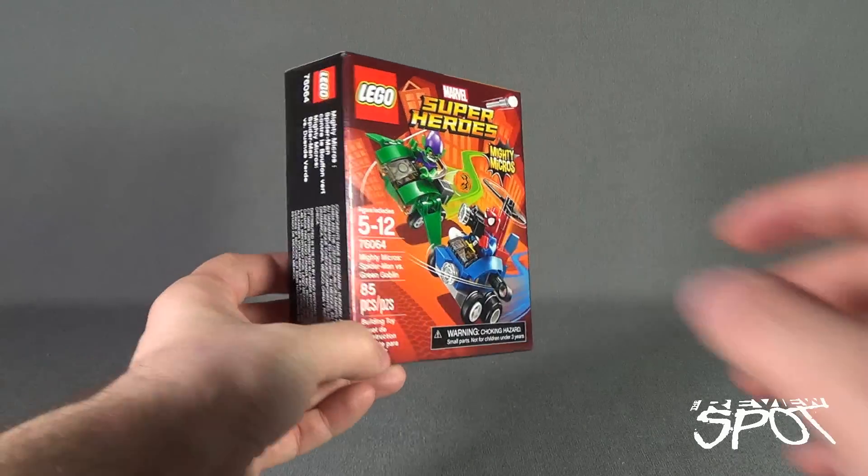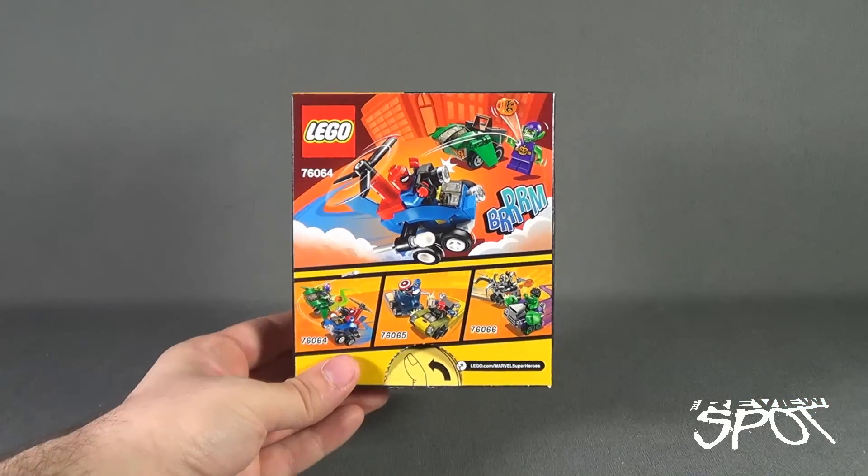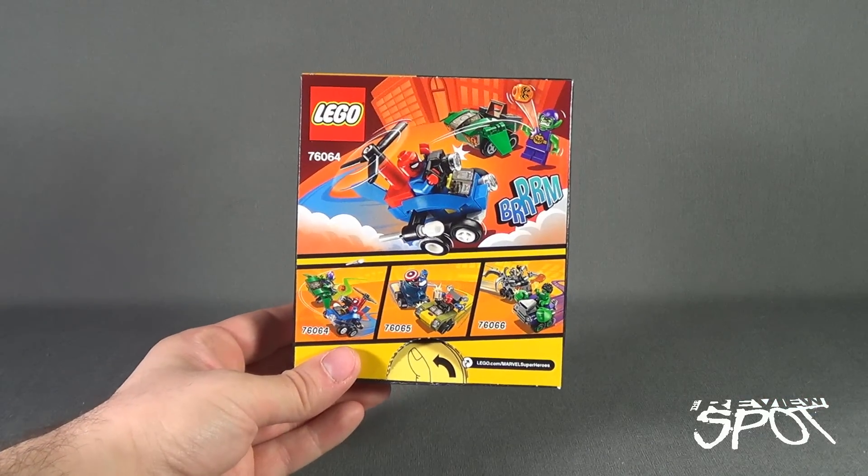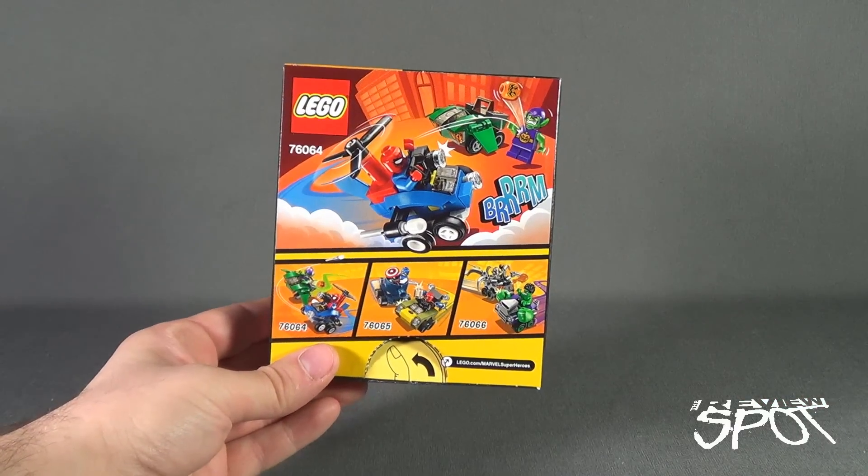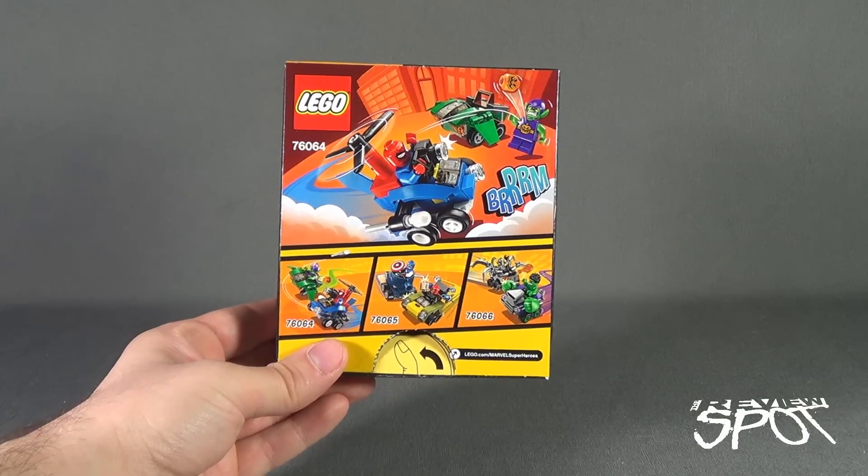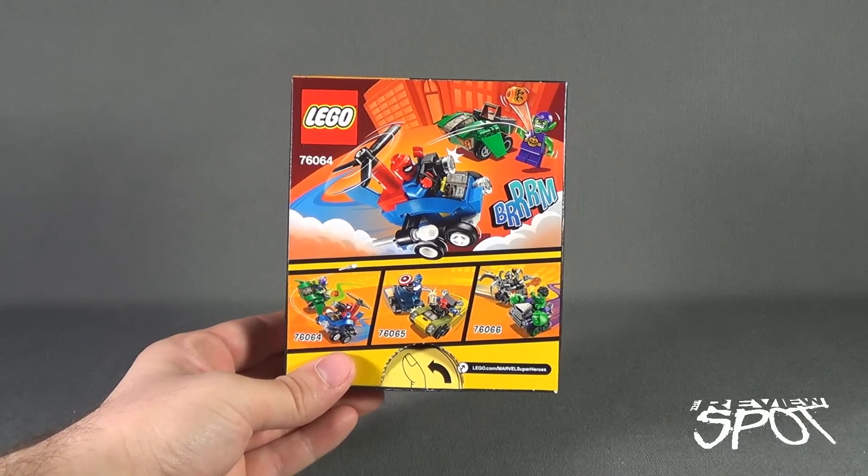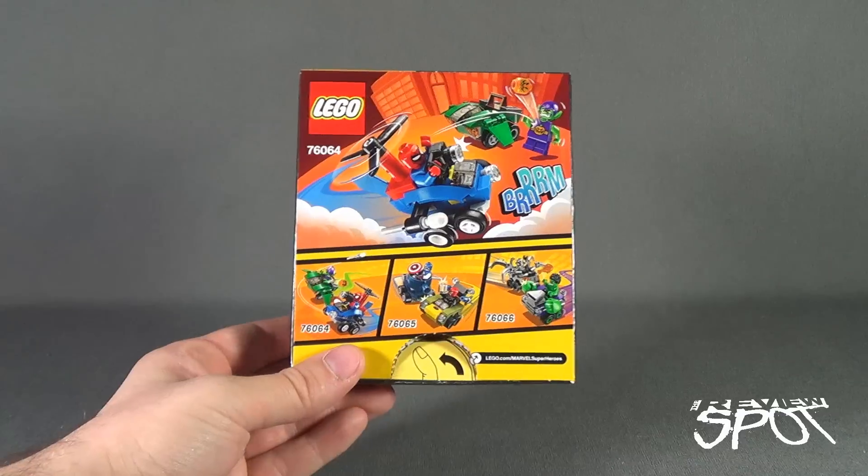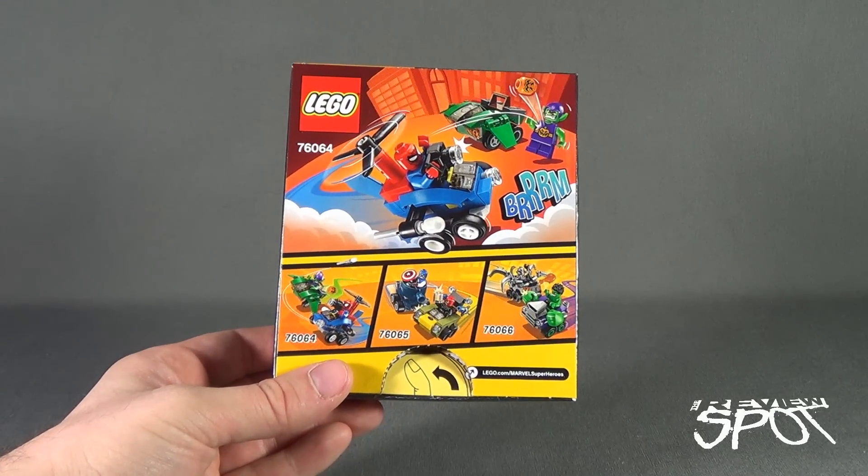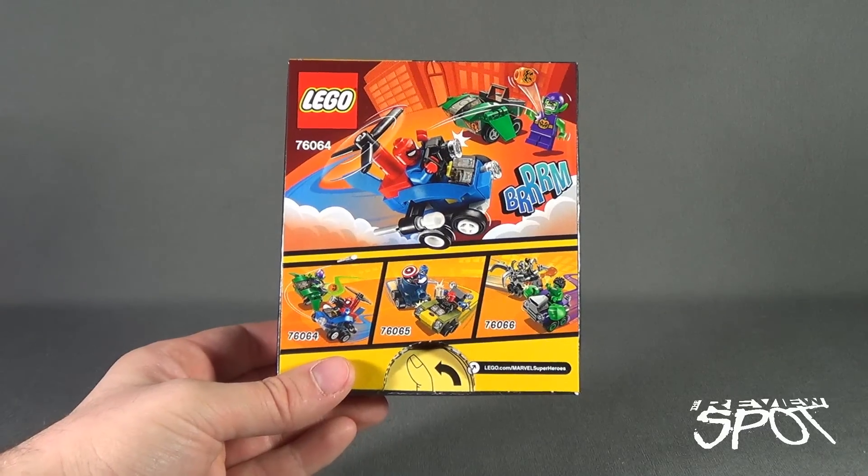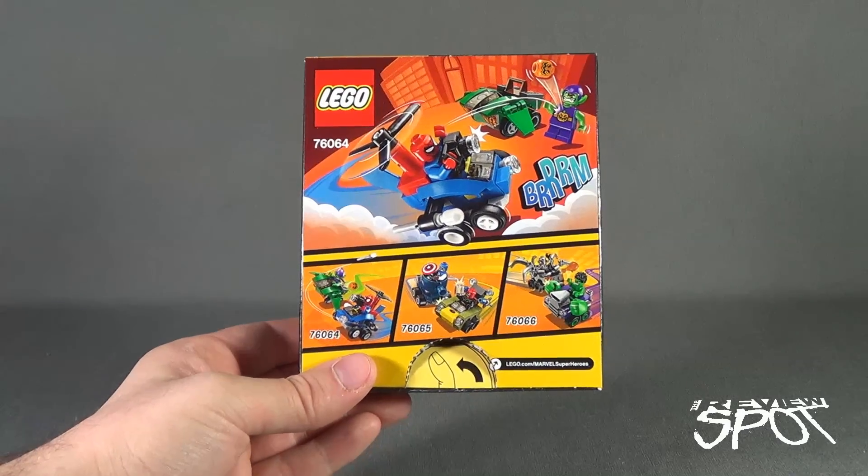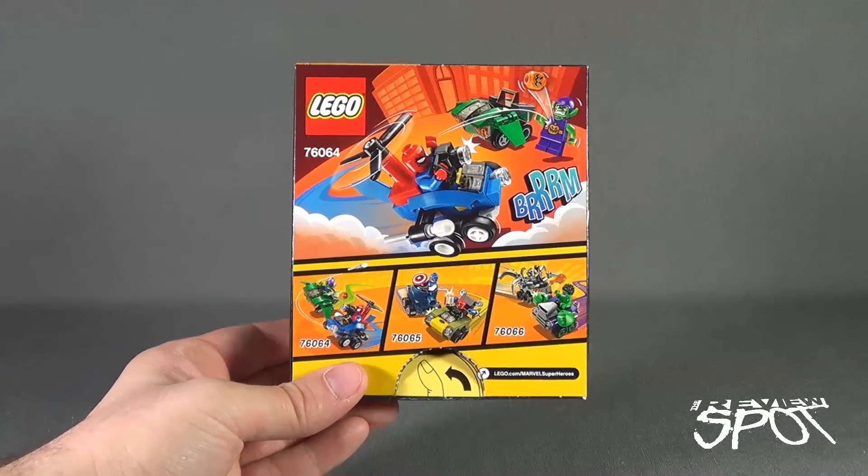The back of the package shows you what the two vehicles will look like in action poses. Spider-Man with his camera taking picture of the Green Goblin with his pumpkin bomb. Other sets available as well besides Spider-Man and Green Goblin - there's also Captain America and Red Skull, and Ultron and Hulk, all of which Spot will be looking at in future videos.